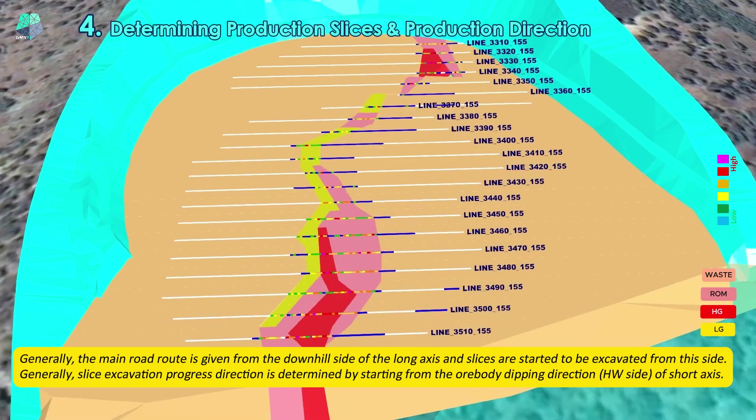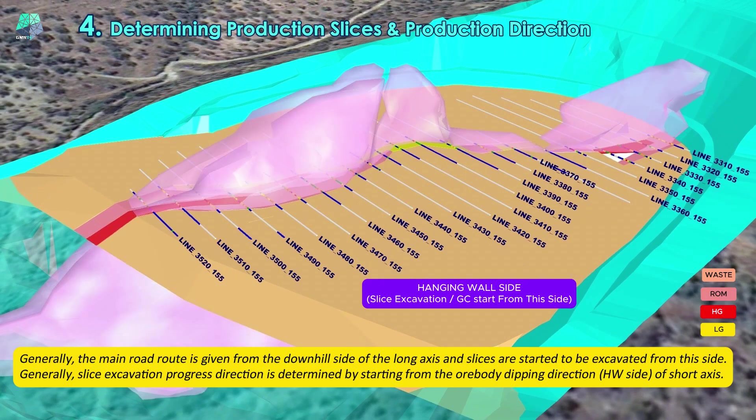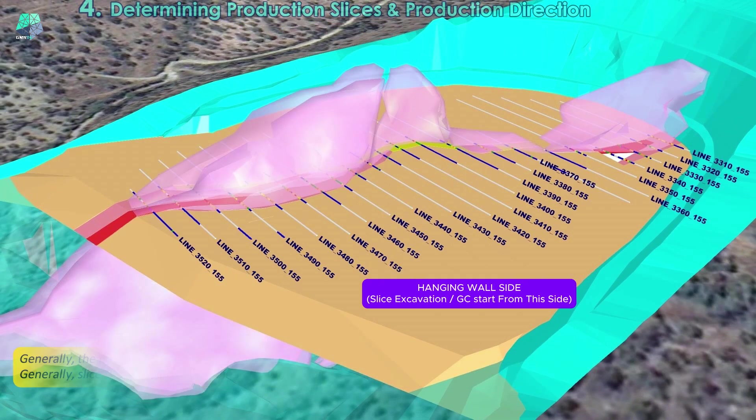Slice excavation progress direction is determined by starting from the ore body dipping direction or the hanging wall side of the short axis.